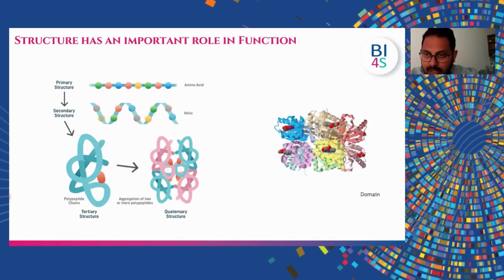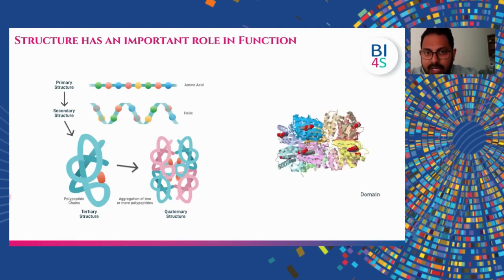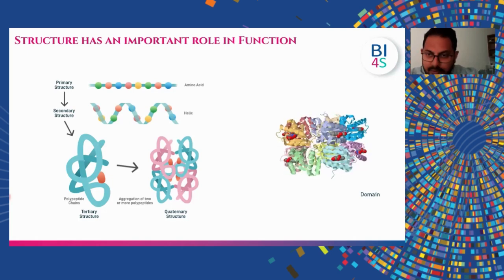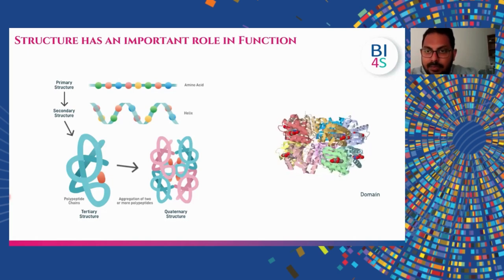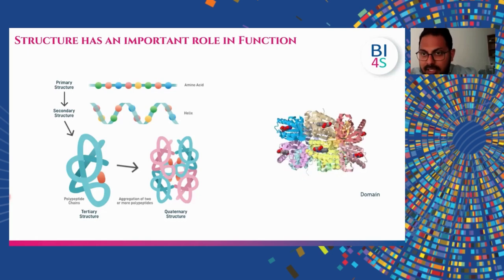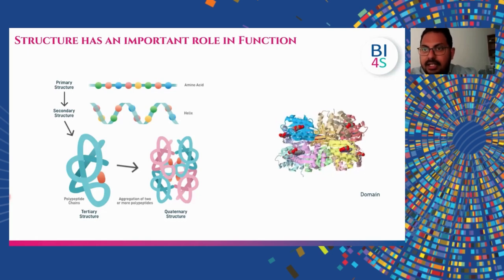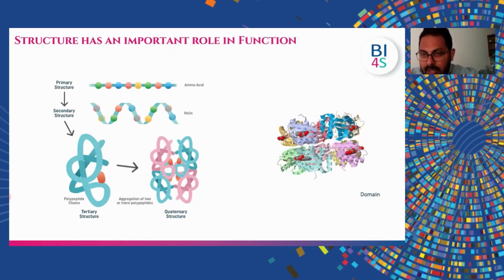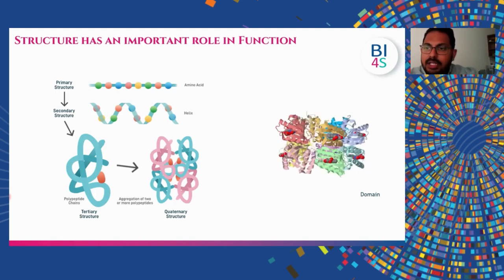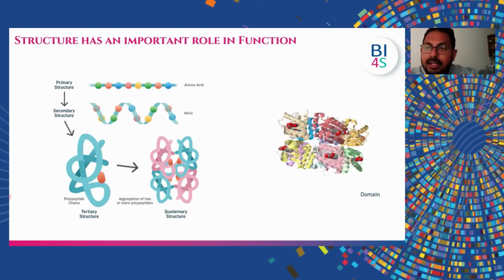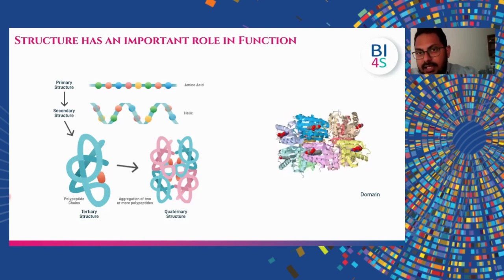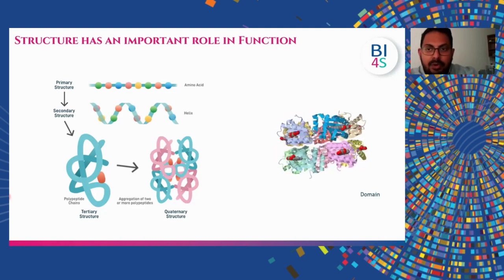There are also parts called domains. These domains are formed due to folding — there are several regions in the protein that are formed this way. In this 3D structure, you can see the parts with red color spheres which are domains, and these could have different specific functions like acting as a receptor, epitope, etc.